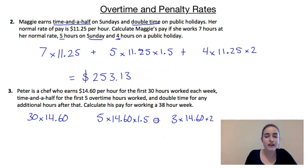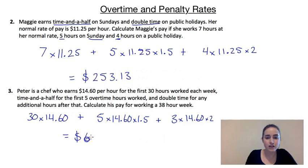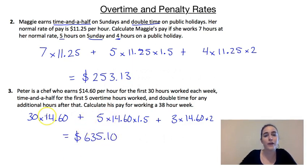We add all of those together to figure out how much he gets paid all up, and that gives us his final income of $635.10 for the whole week. So that's having a look at overtime and penalty rates.